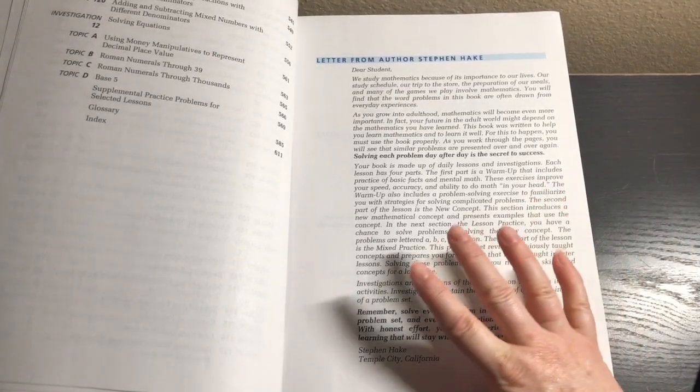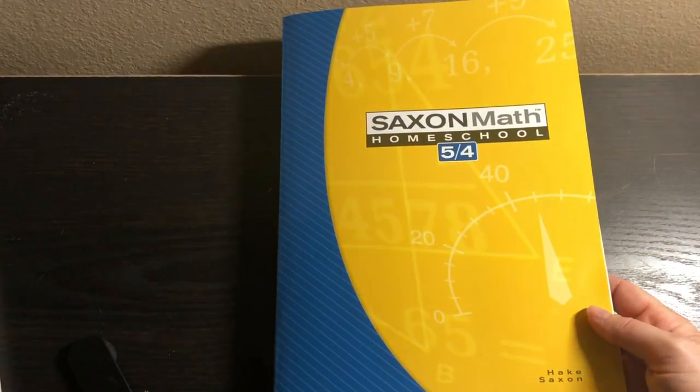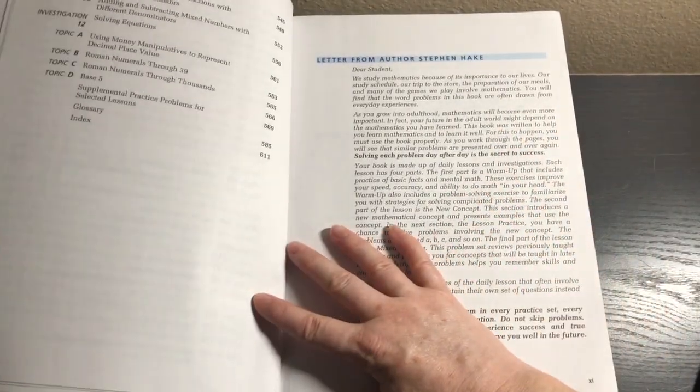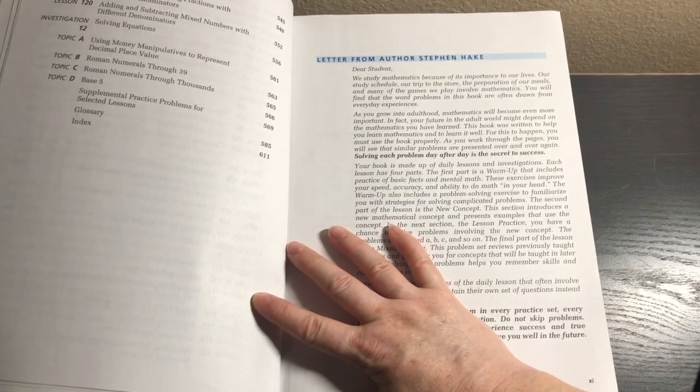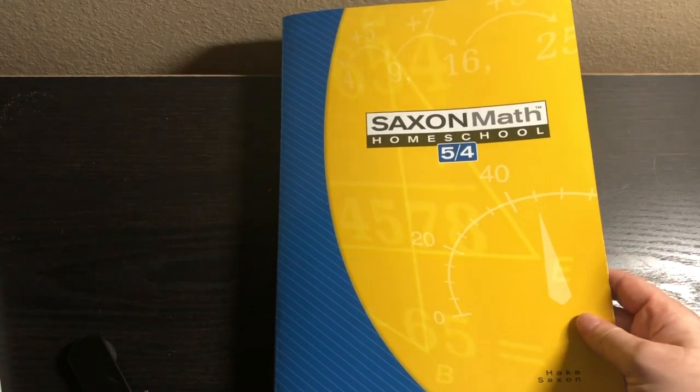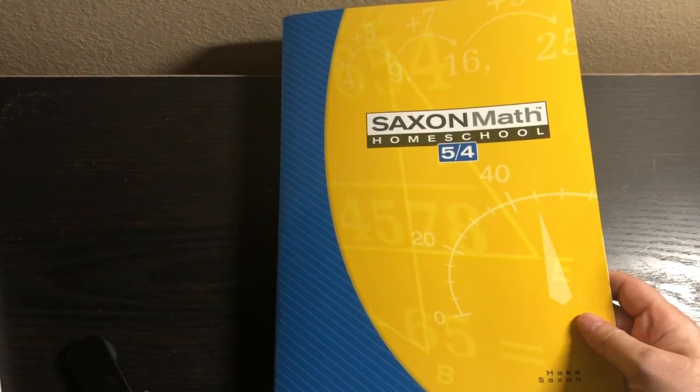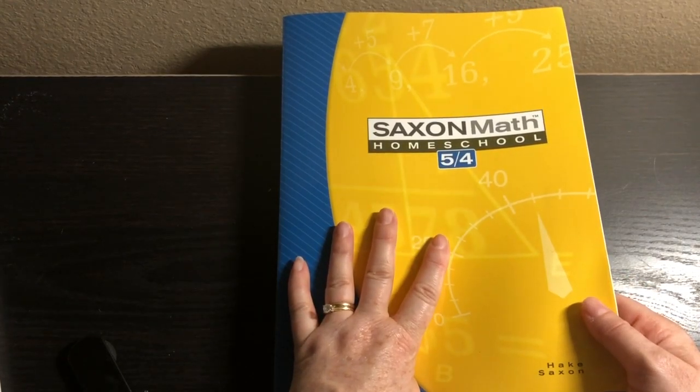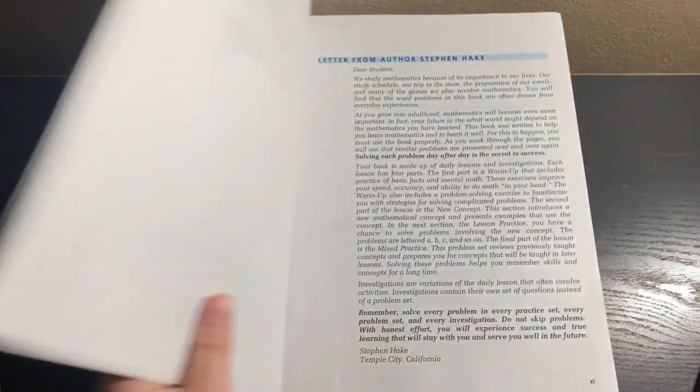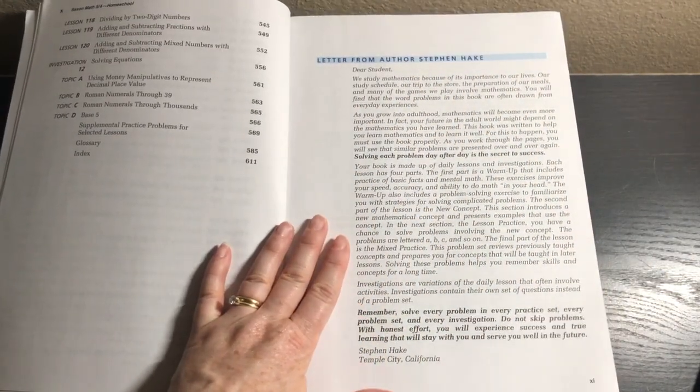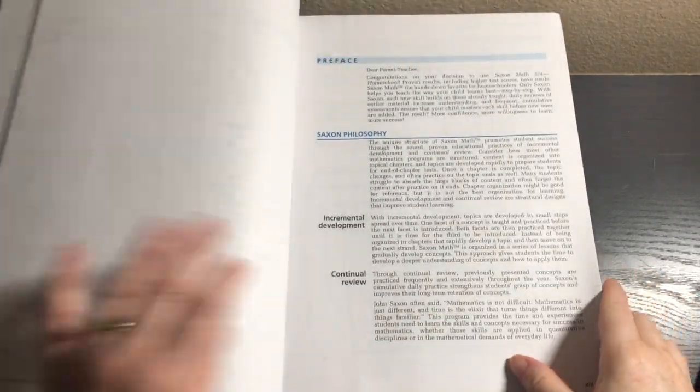This is the newest version of Saxon 5-4, which is actually not written by John Saxon, it's written by Stephen Hake. There's a really fascinating Saxon video that another YouTuber did, I'm gonna link that down below. True Saxon purists would never consider this, but I was looking for the older edition of 5-4, the original first or second edition, and they're extremely hard to come by. People know they're kind of in demand and make them very expensive on eBay.